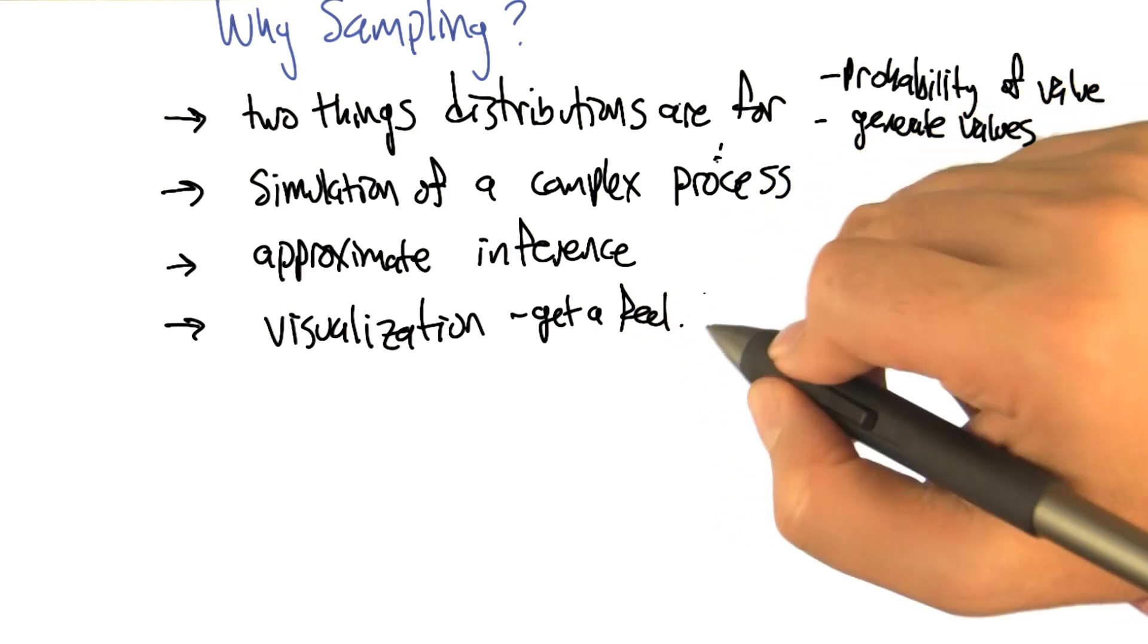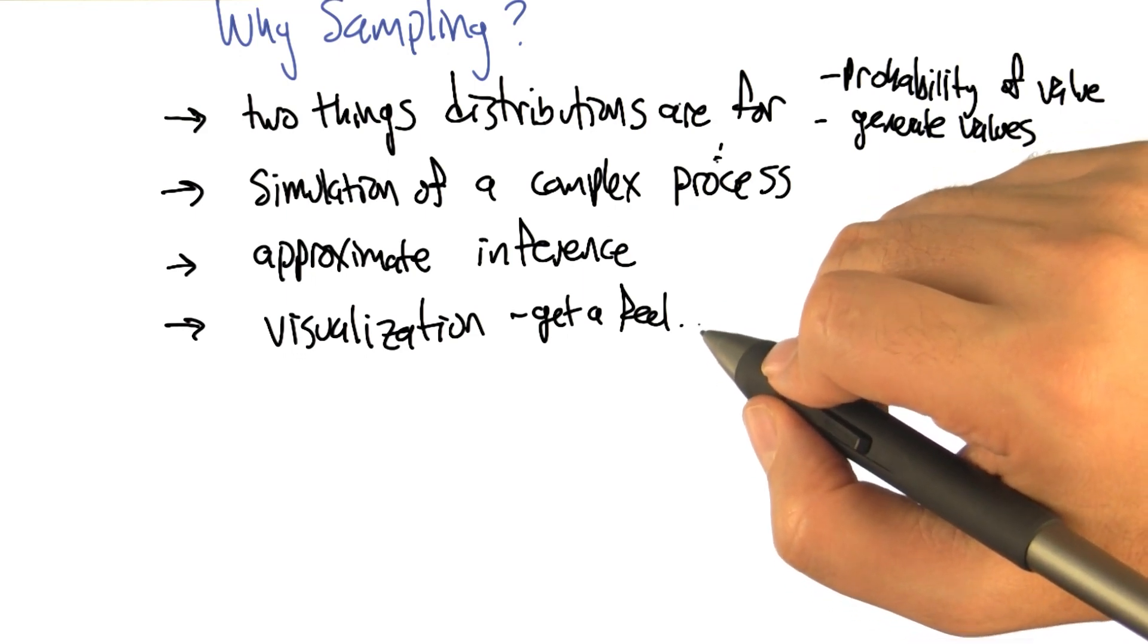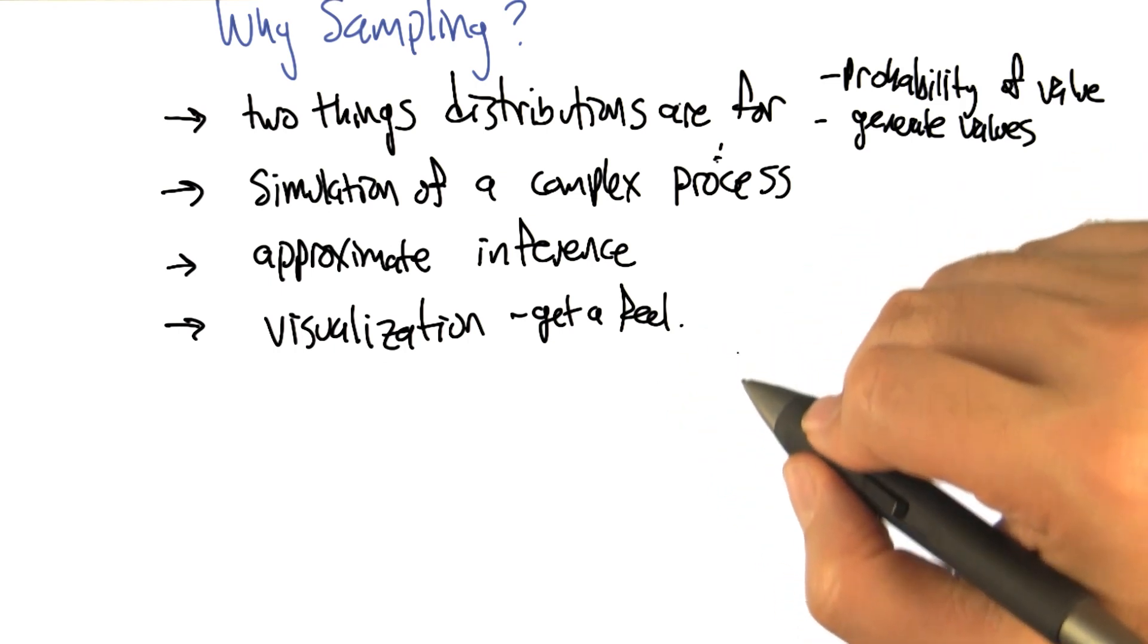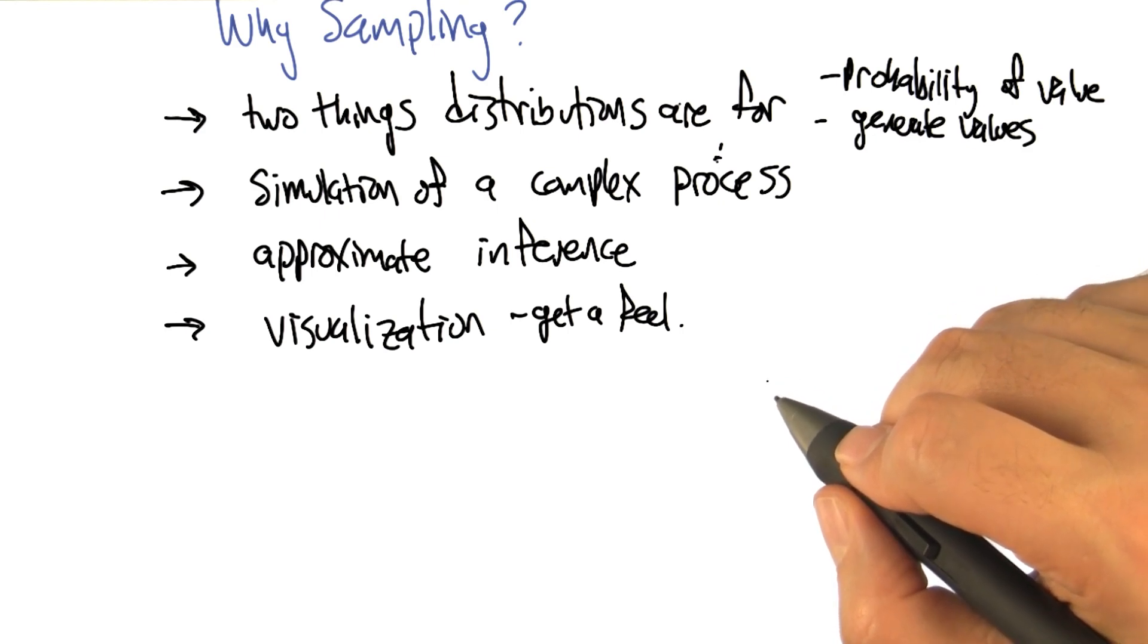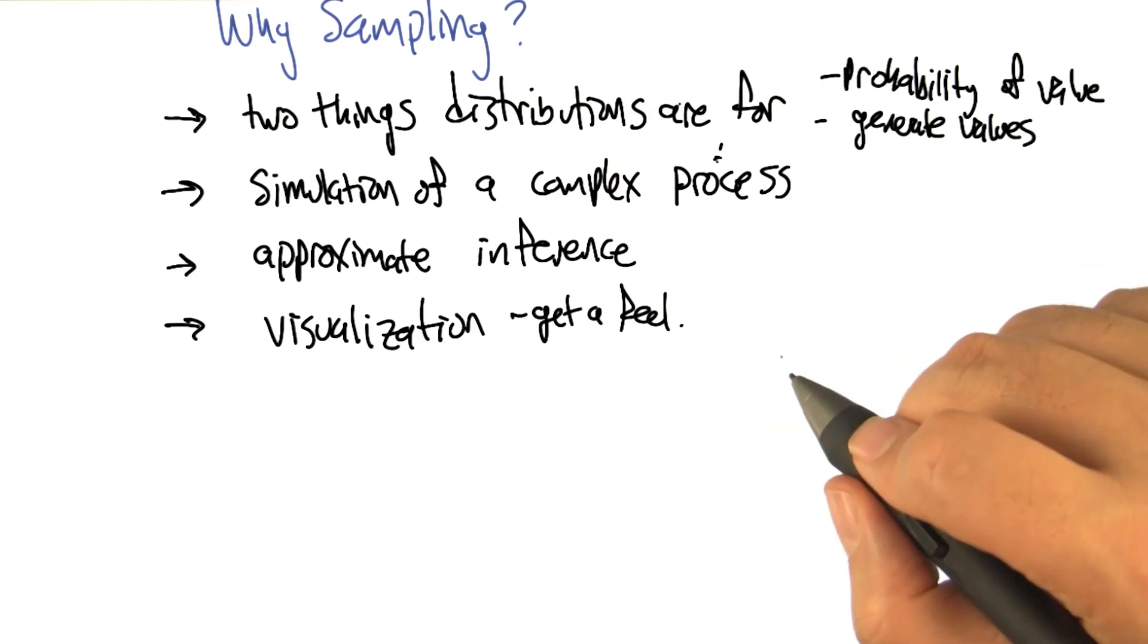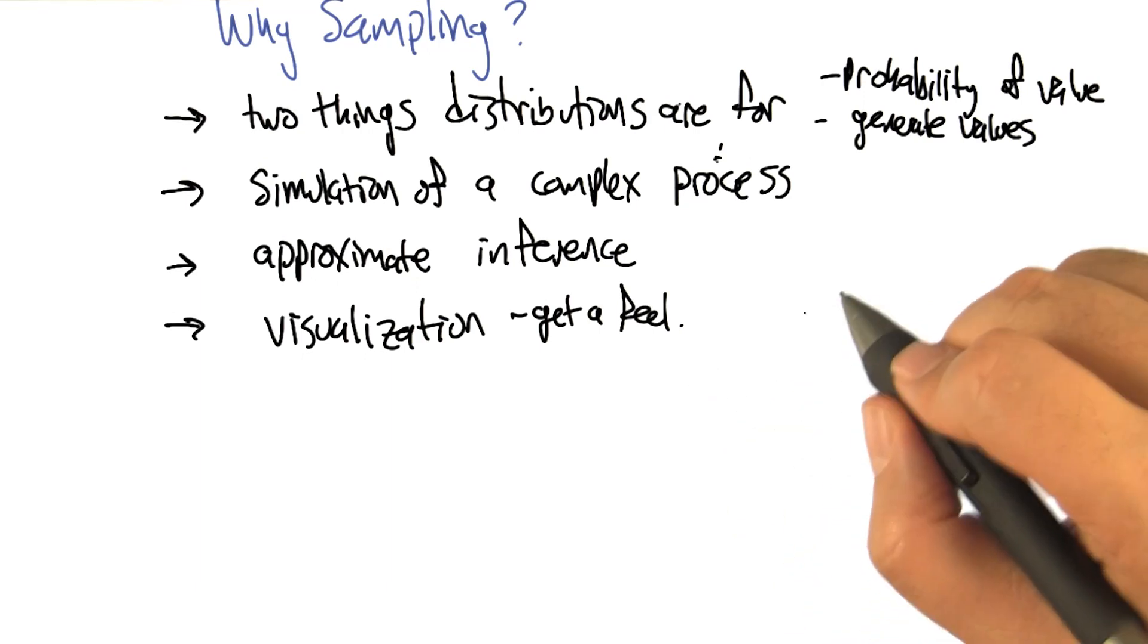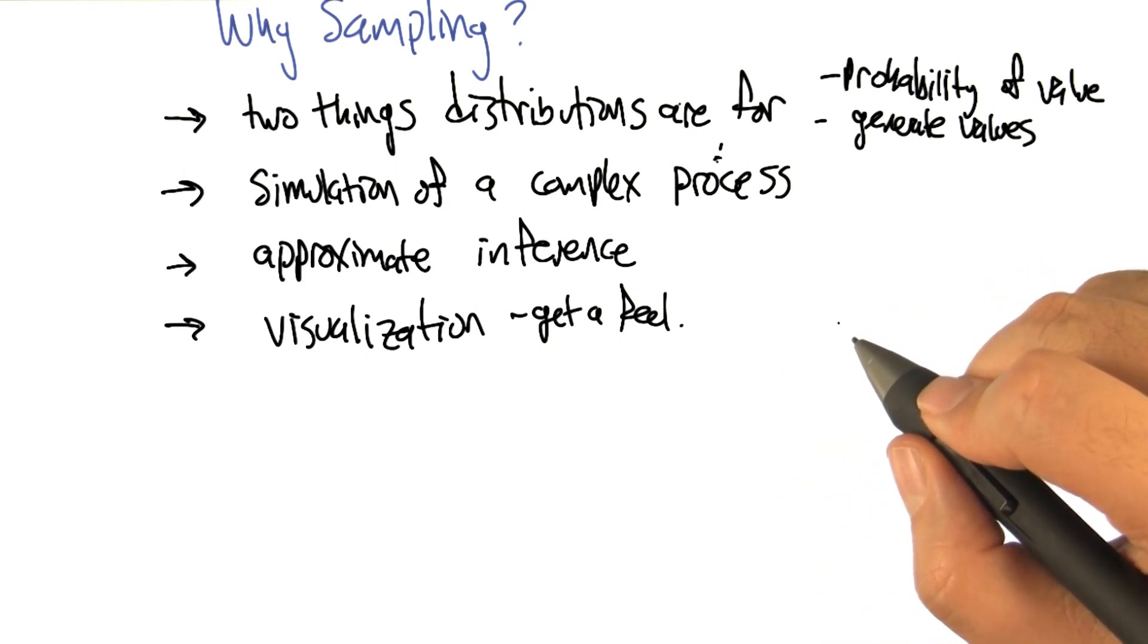So you could imagine in a medical domain, a doctor who's thinking about prescribing a particular kind of drug for a particular kind of person. If the information about drug interactions and so forth was represented as a big belief net, it might be hard to look at it and know anything. But if you use that to generate a bunch of artificial patients, you might start to get a feel for, oh, these kinds of people tend to react badly in these kinds of circumstances. That's still a kind of approximate inference, right?